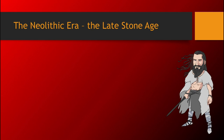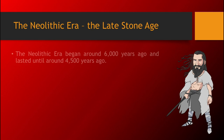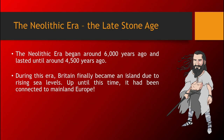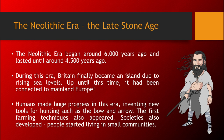The Neolithic Era, the Late Stone Age, began around 6,000 years ago and lasted until around 4,500 years ago. During this era, Britain finally became an island due to rising sea levels caused by Ice Ages ending. Up until this time, it had been connected to mainland Europe. Humans made huge progress during this era, inventing new tools for hunting such as the bow and arrow. The first farming techniques also appeared. Societies also developed, and people started living in small communities.